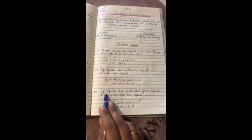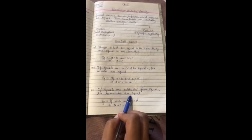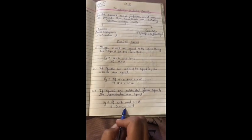It's the same with subtraction also. If equals are subtracted from equals, the remainders are equal. When we subtract two equal things, the whole is also equal. That is the third axiom.